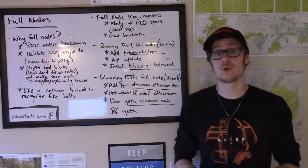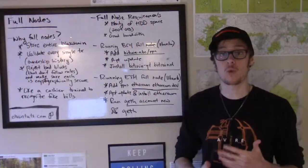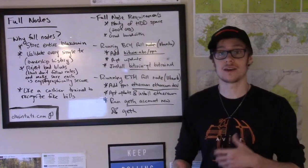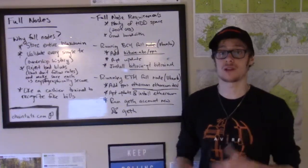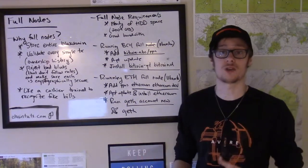These nodes will reject bad blocks that might come in from parties on the network that are trying to commit fraud, and they'll tell other nodes on the network that these blocks are bad. They won't accept them as part of the blockchain history. It's kind of like a cashier that's trained to recognize fake $100 bills — not only will the node not take your fake $100 bill, but they'll also tell other parties on the network that this other party is trying to use fraudulent money.